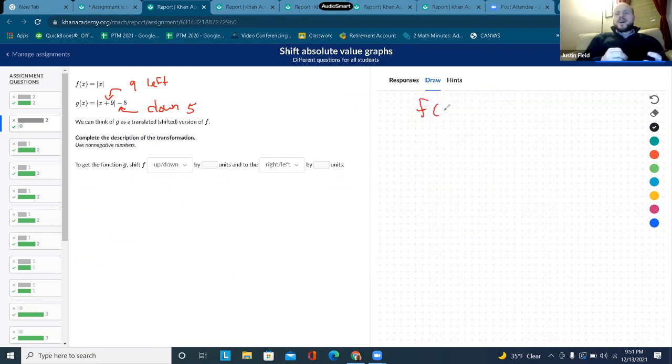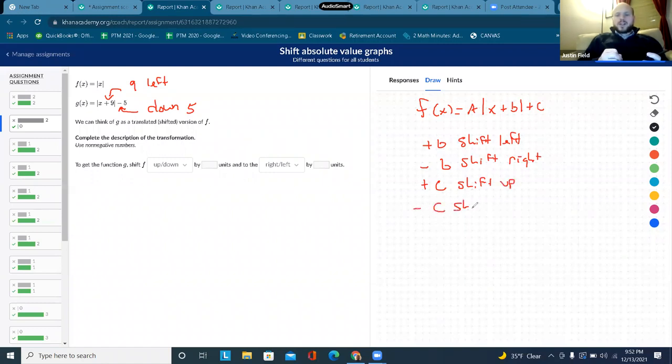So we have f of x equals, and we'll put an A on the outside. So x plus B plus C. If we have a positive B, then that is shifting left. If we have a negative B, that is shifting right. If we have a positive C, that is going to shift the graph up. If we have a minus C, that is going to shift the graph down.